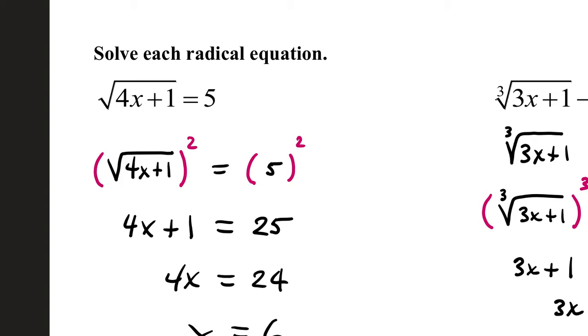Once you have the radical term isolated, if you have a square root radical, then you square both sides to remove that radical. You have to square both sides to make sure that each side of the equation stays balanced, but squaring will remove a square root radical. The square root and square cancel, leaving you with 4x plus 1 equals 5 squared, which is 25.